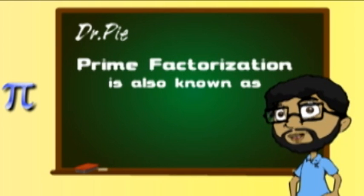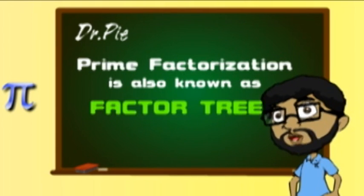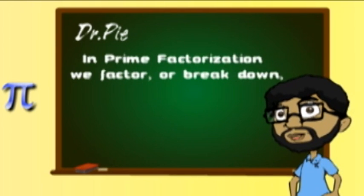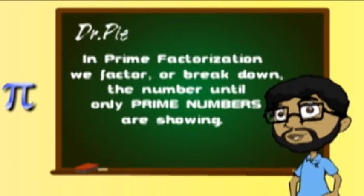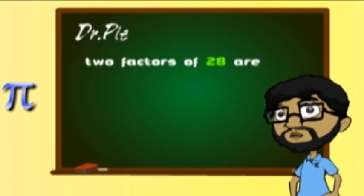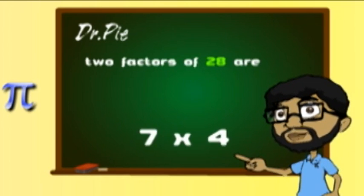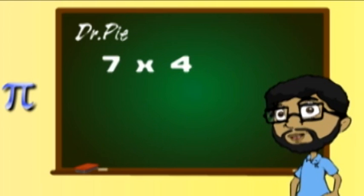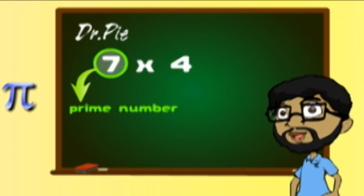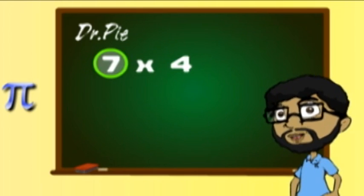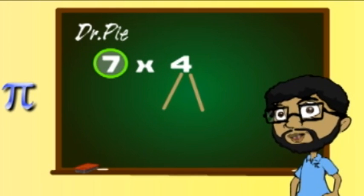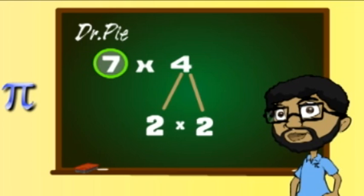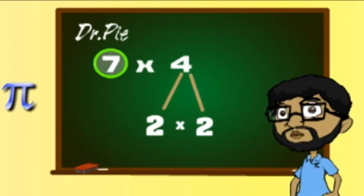Prime factorization is called a factor tree — when you break down the number as small as it can be. Two factors of 28 are 7 and 4. Draw a circle around 7 and break down the 4 more. Draw a couple more branches that extend from the 4; 2 and 2 are the branches that are closest to the floor.